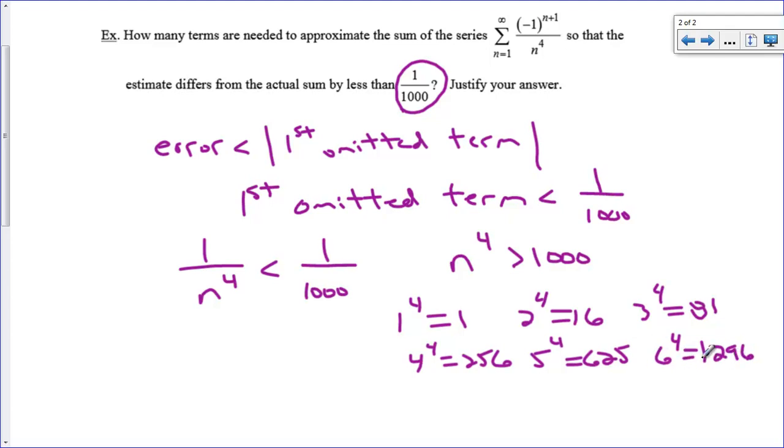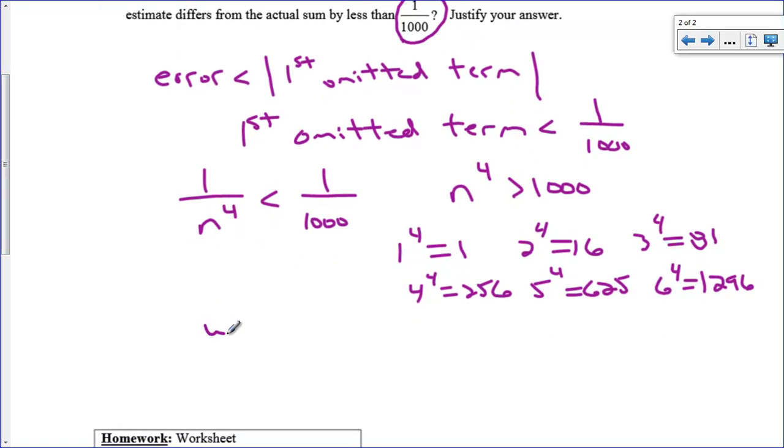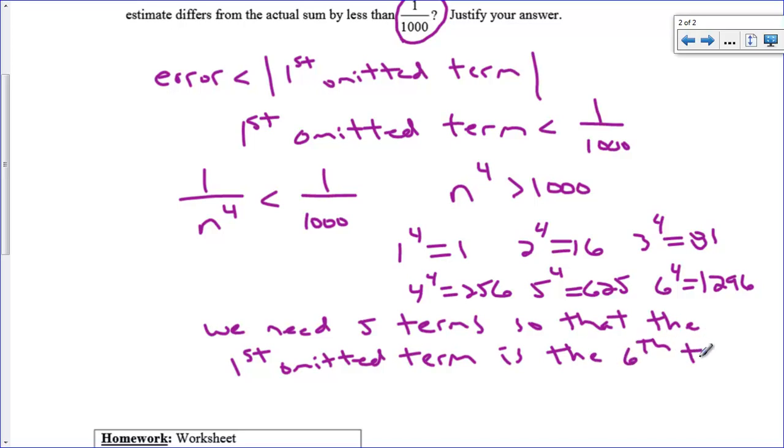Finally, we will get larger than one thousand. So we need five terms. So that the first omitted term is the sixth term. So that the first omitted term is term number six. And that's just sort of a guess and check process. Pretty easy error statement. Not too difficult. So anyway, that's all for that. We'll have a worksheet and I will see you guys tomorrow.